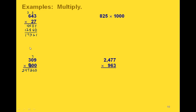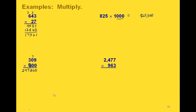We can do the same with this problem because again we have something that's a multiple of 1,000. So we know our answer will have three zeros at the end. We just have to think about multiplying 825 times 1, which gives us 825. So our answer is 825,000.